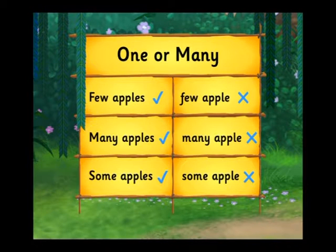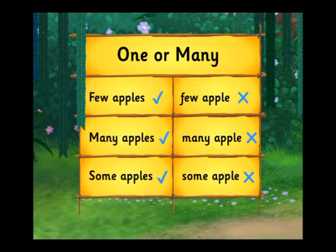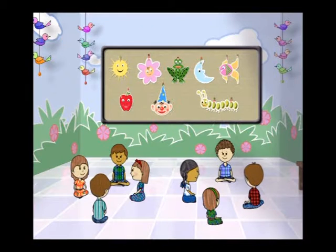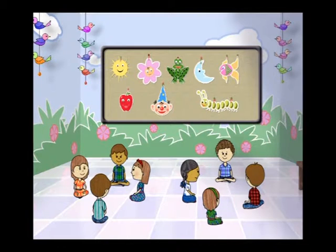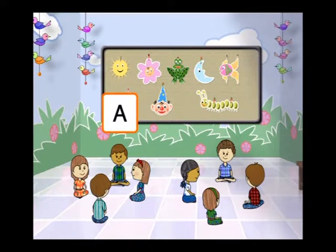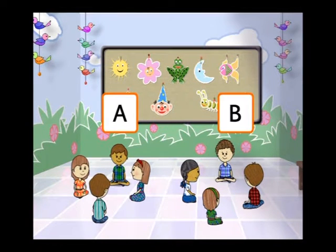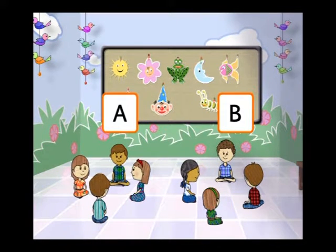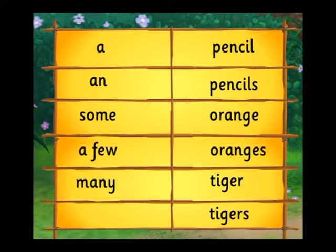Now, let's look at the words some, few and many. Let's do this in groups. Form two groups. Ahmed, Rhea, Samir and Jenny can be group A. The rest will be group B. For each word in column A, choose one or more words from column B.